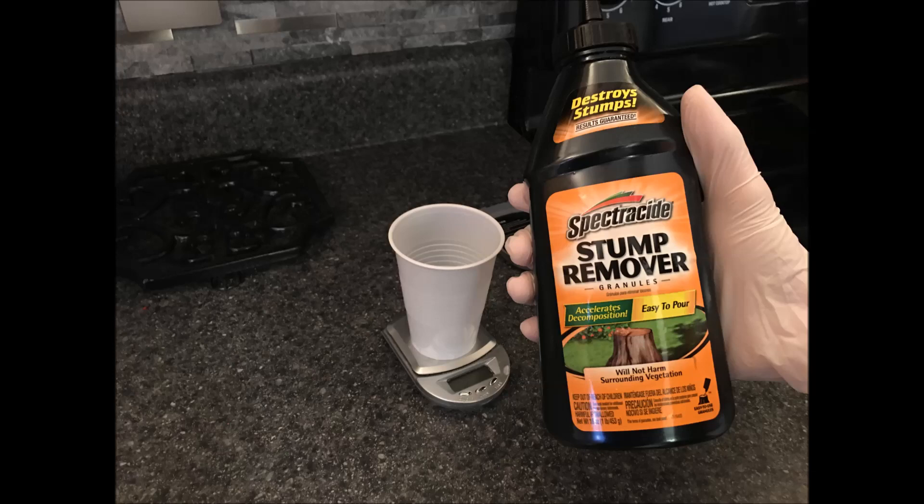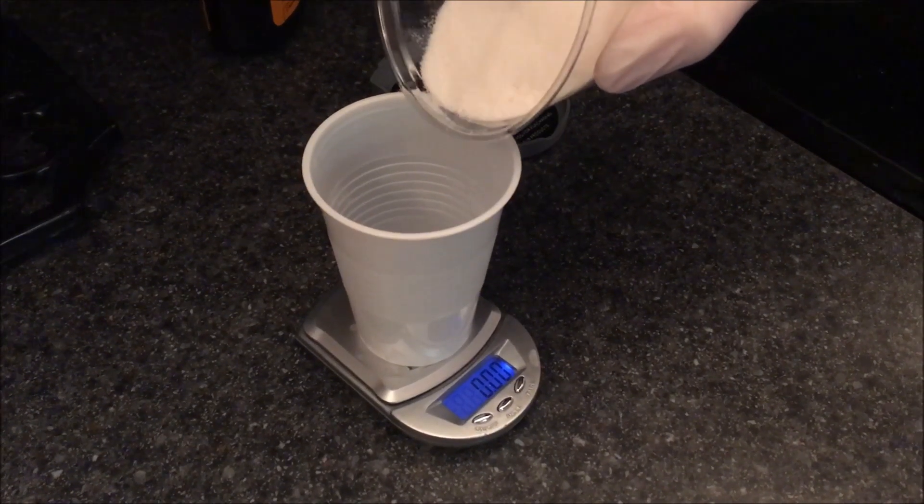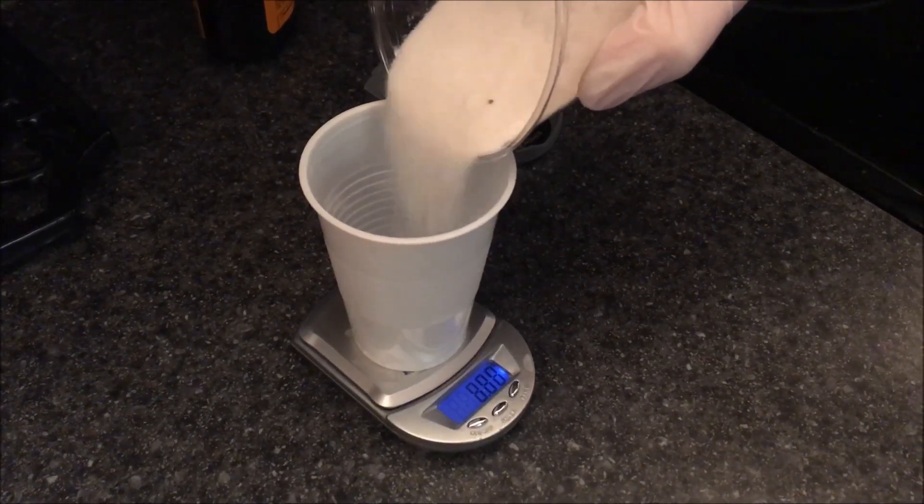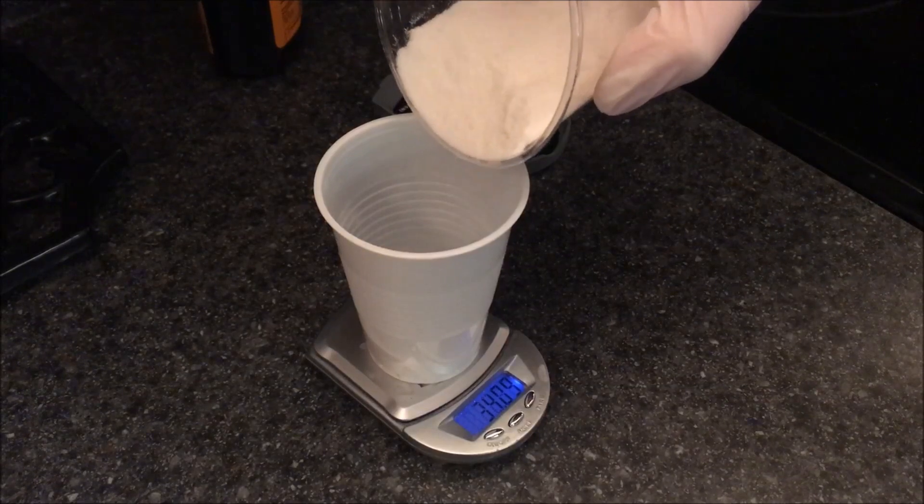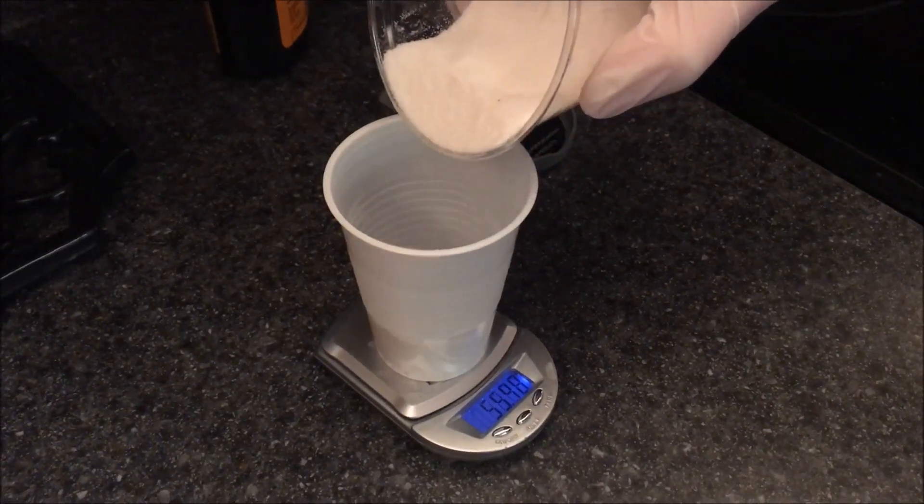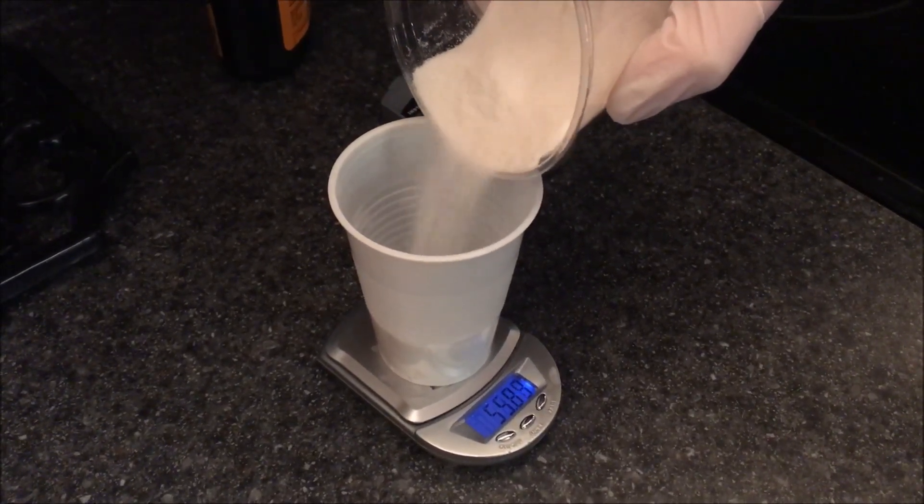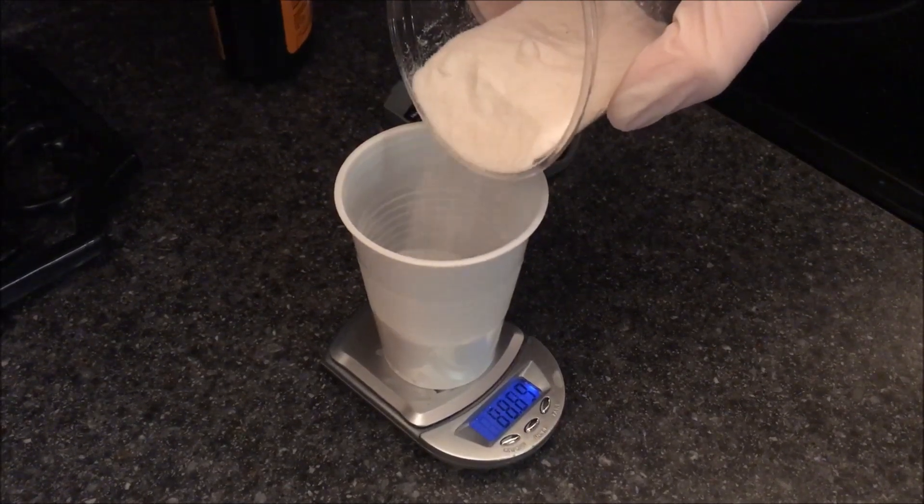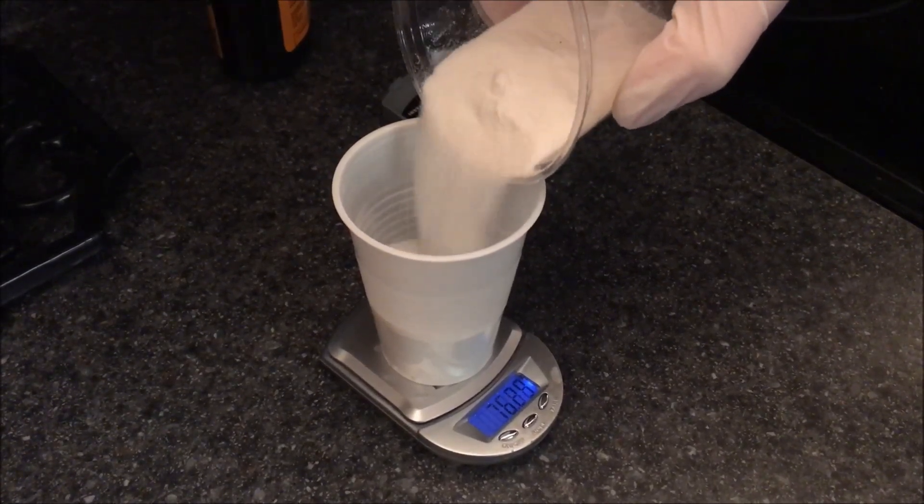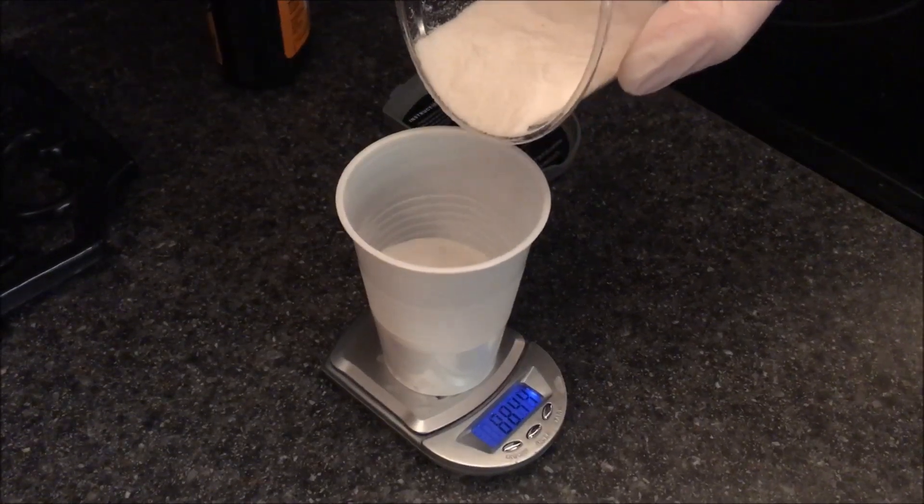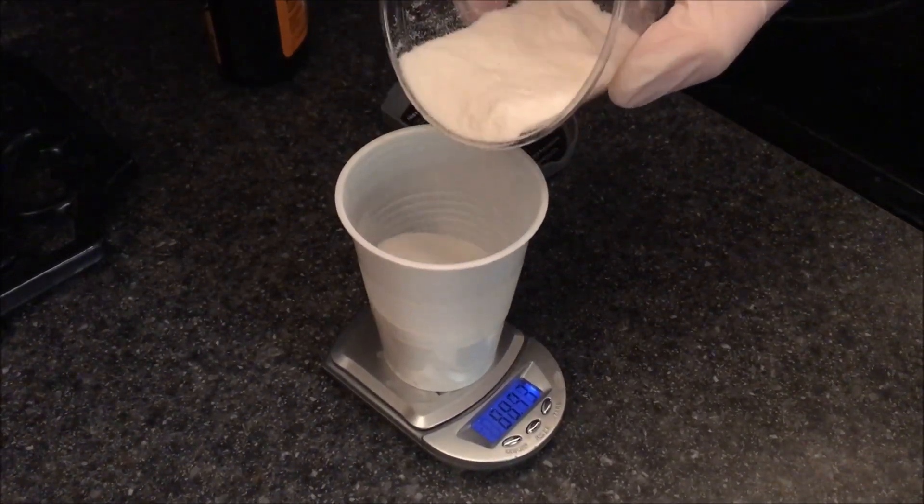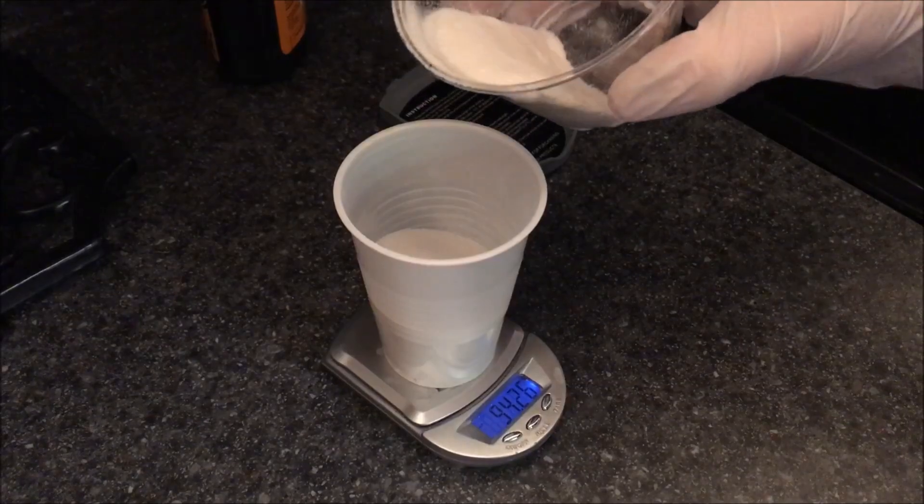First, we will need potassium nitrate. The potassium nitrate I used was from stump remover, so it probably has a few other impurities. I measured out 343 grams of potassium nitrate. I had to do it in small portions because my scale didn't go up to 343 grams.